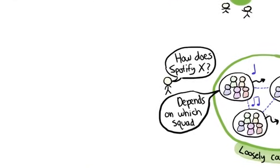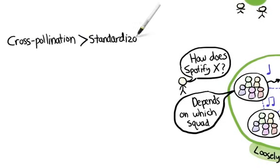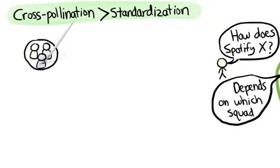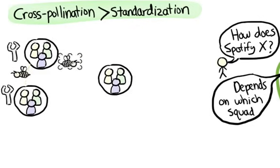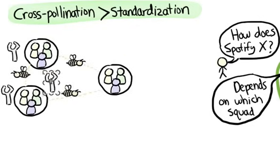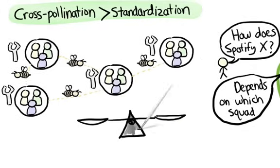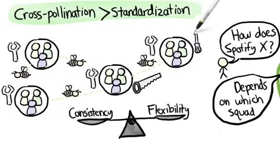Instead of formal standards we have a strong culture of cross-pollination. When enough squads use a specific practice or tool such as git that becomes the path of least resistance and other squads tend to pick the same tool. Squads start supporting that tool and helping each other and it becomes like a de facto standard. This informal approach gives us a healthy balance between consistency and flexibility.